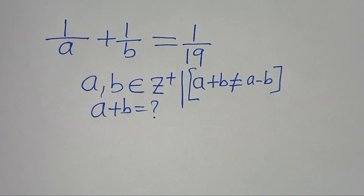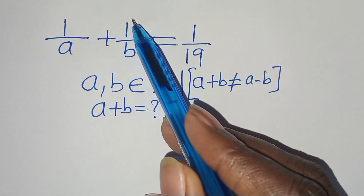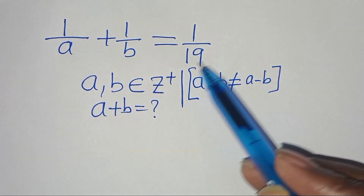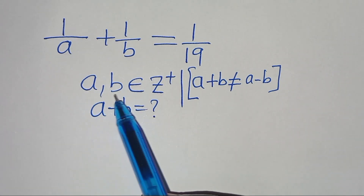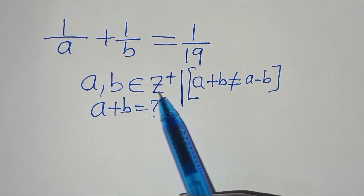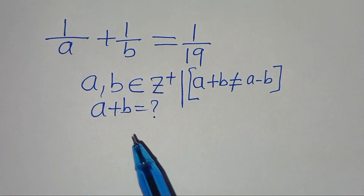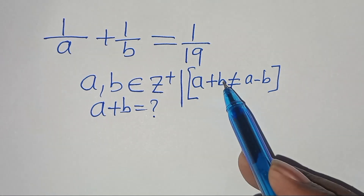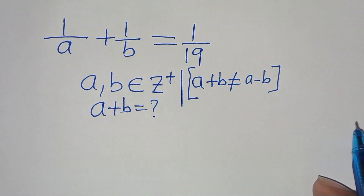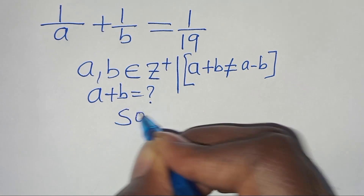Hello everyone, you are welcome to solve this nice algebra problem: 1 over a plus 1 over b equals 1 over 19, given that a and b are positive integers. We need to find the value of a plus b, given that a plus b is not equal to a minus b. Let's present a solution from here.